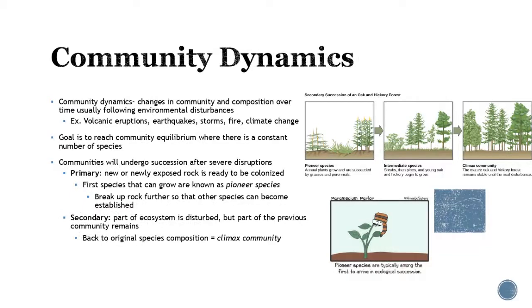There are always changes in community composition over time because the environment is constantly changing. Natural disasters happen — volcanoes, storms, fire, climate. Australia has gone through horrible series of fires, and climate change is really changing things. The oceans are changing too. There was a great documentary on Netflix where a group tried to measure coral bleaching over time using fixed cameras, then had to physically go and take pictures every day to see how it was changing.